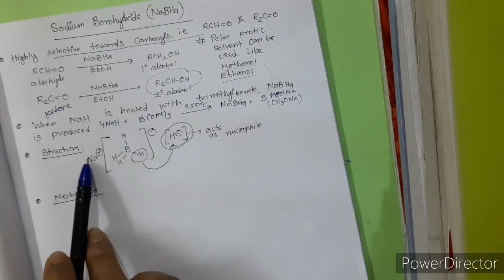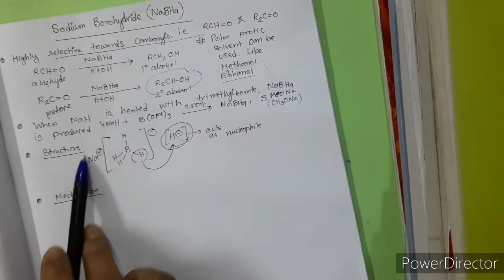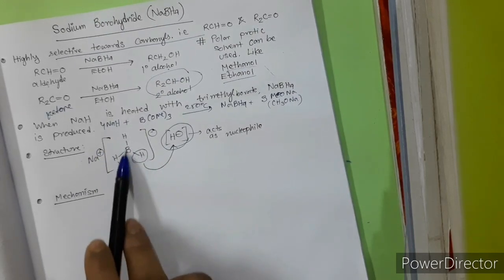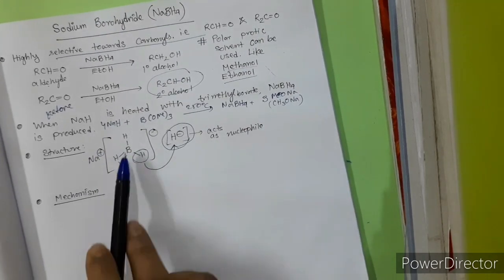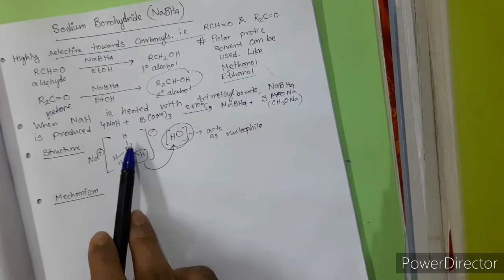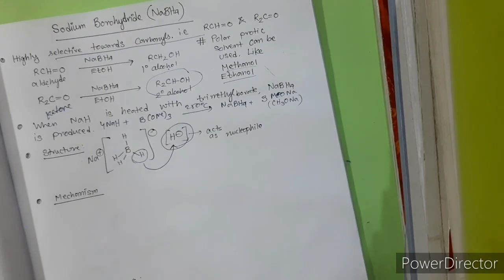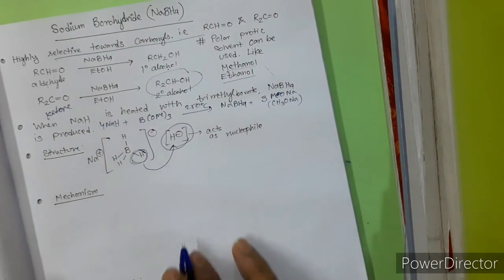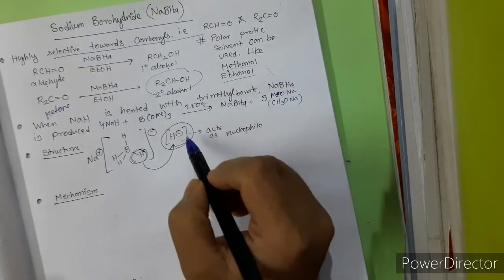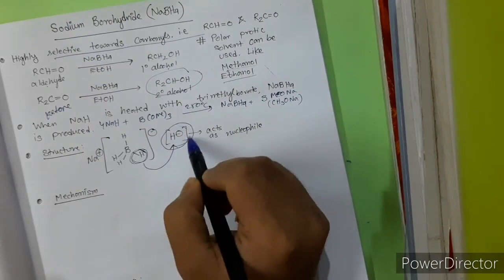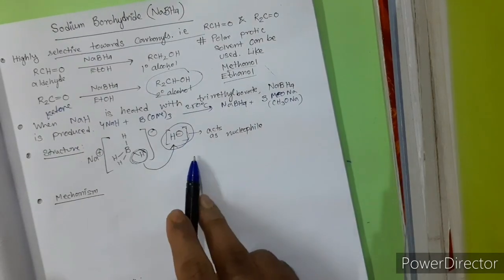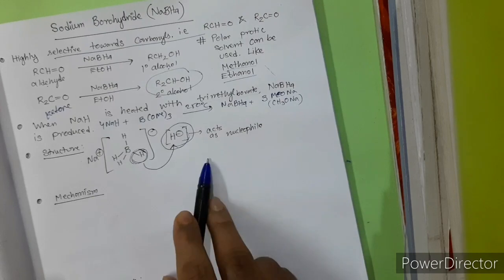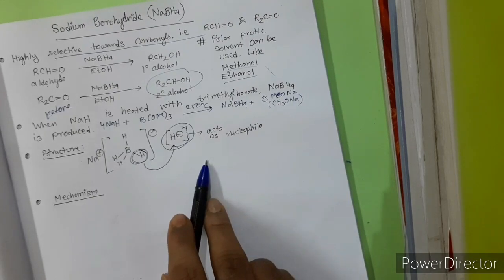NaBH4 has a structure just like lithium aluminum hydride. In LiAlH4, the cation was lithium plus and aluminum was present; here boron replaces aluminum. Just like lithium aluminum hydride, it is also a potent hydride source, and the H⁻ acts as a nucleophile.